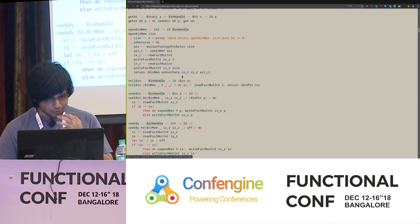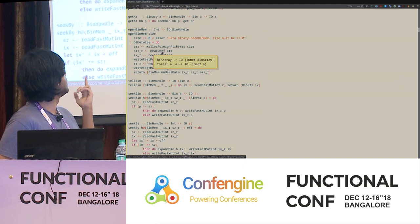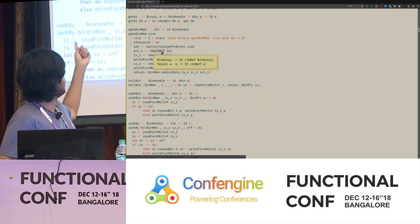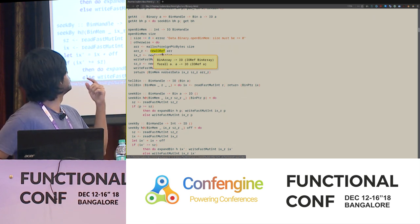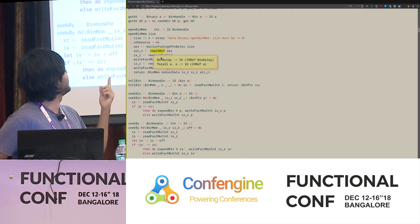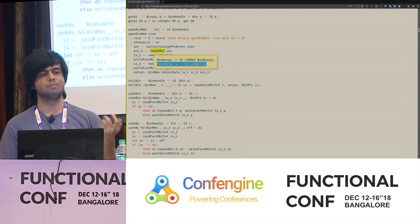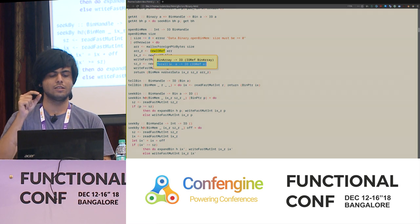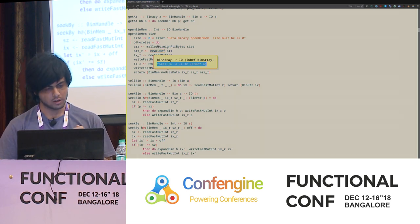Now if I hover over something with a polymorphic type, it'll give me both the specialized type — how you're using it at this position — and also the generic type, the actual polymorphic type of the function. So you get to see both the original type and the specialized instantiation at this point.